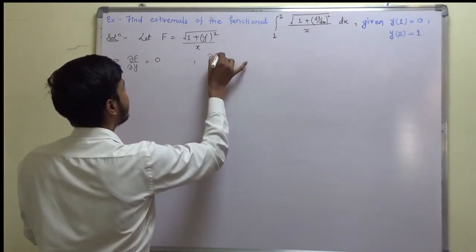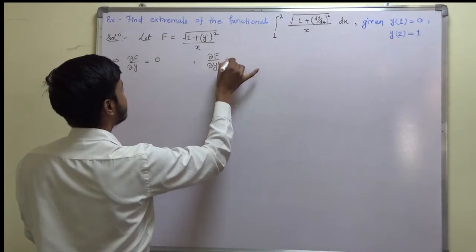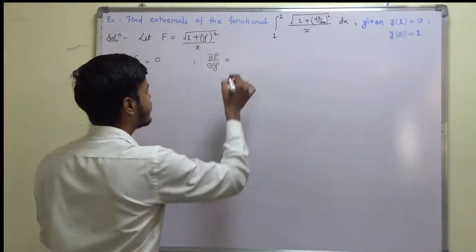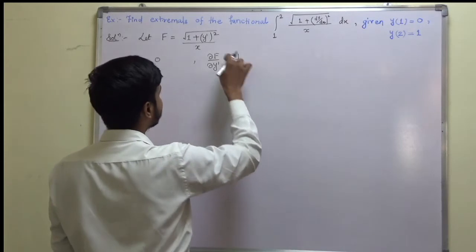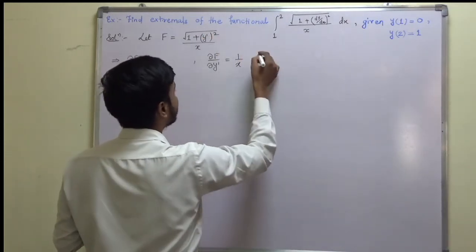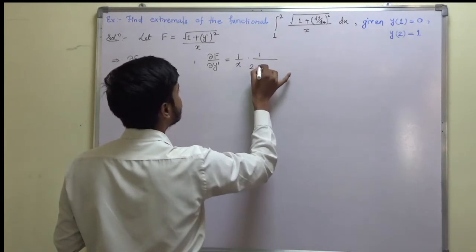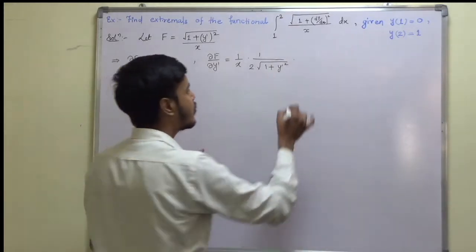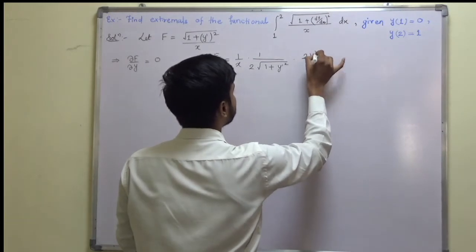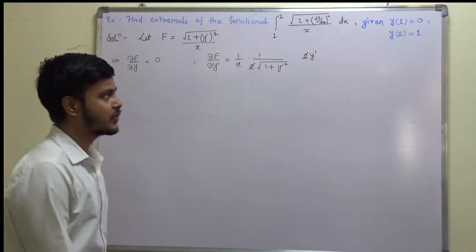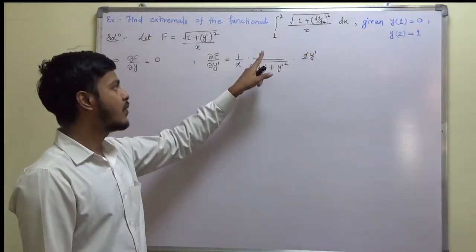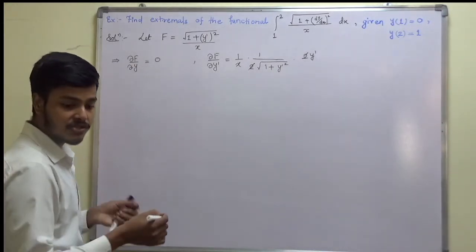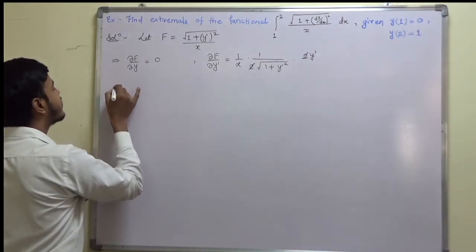Next, ∂f/∂y′: treating 1/x as a constant, the derivative of the square root gives (1 / (2√(1 + y′²))) times the derivative of (1 + y′²), which is 2y′. The 2s cancel, so ∂f/∂y′ = y′ / (x · √(1 + y′²)).